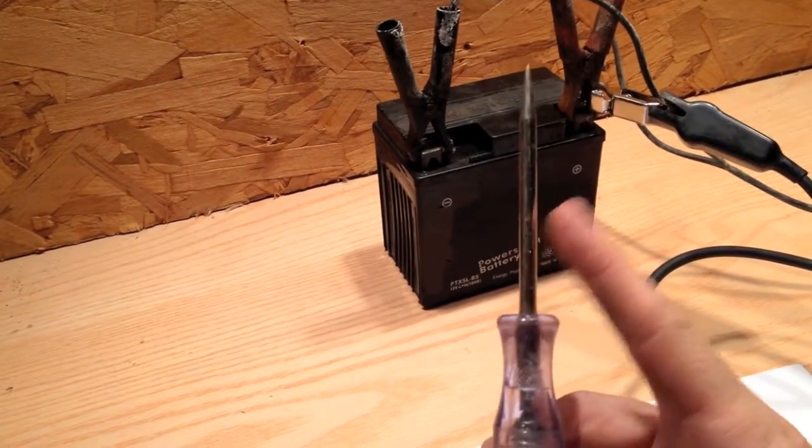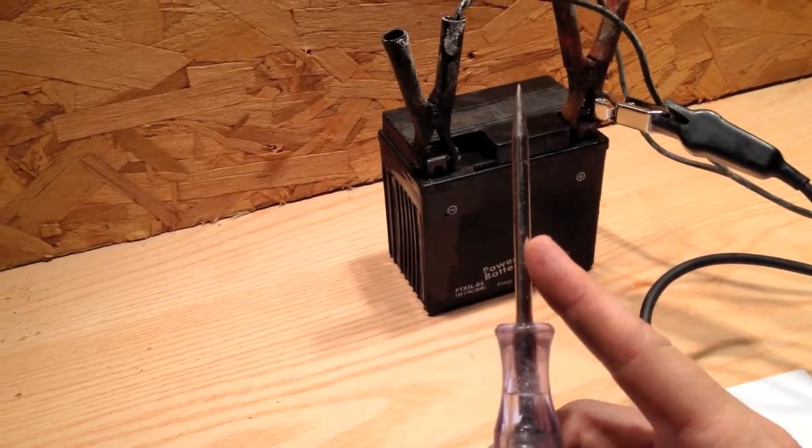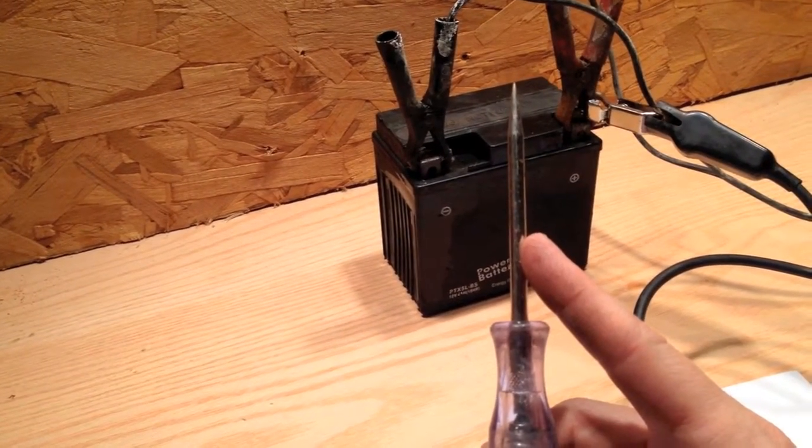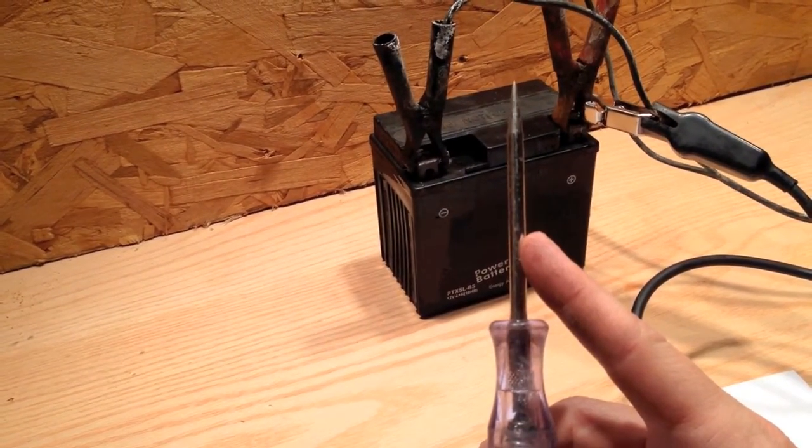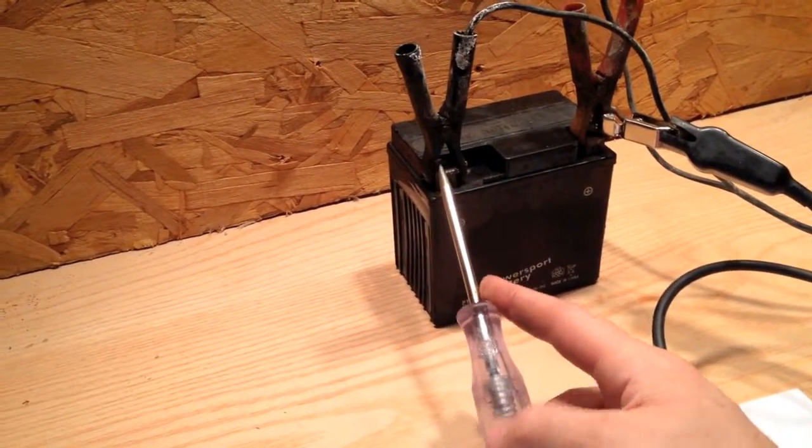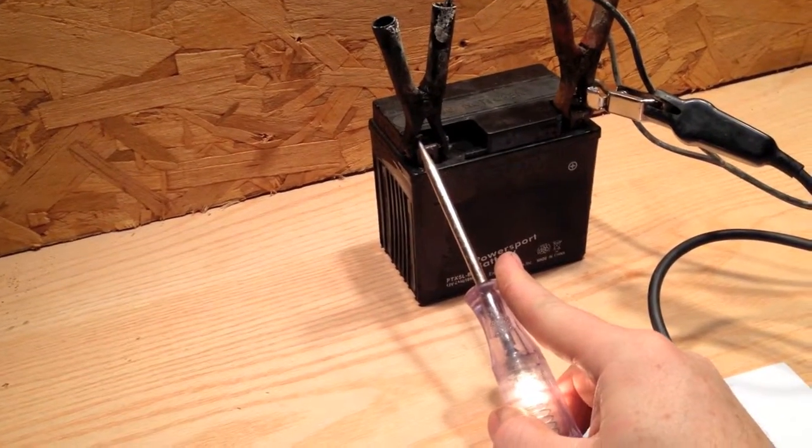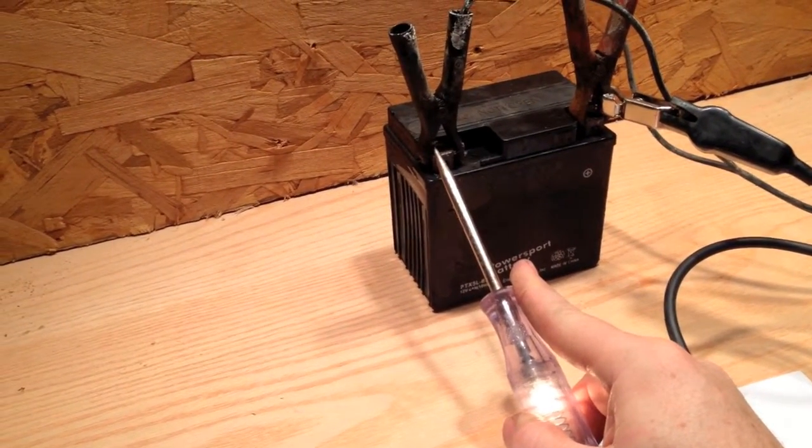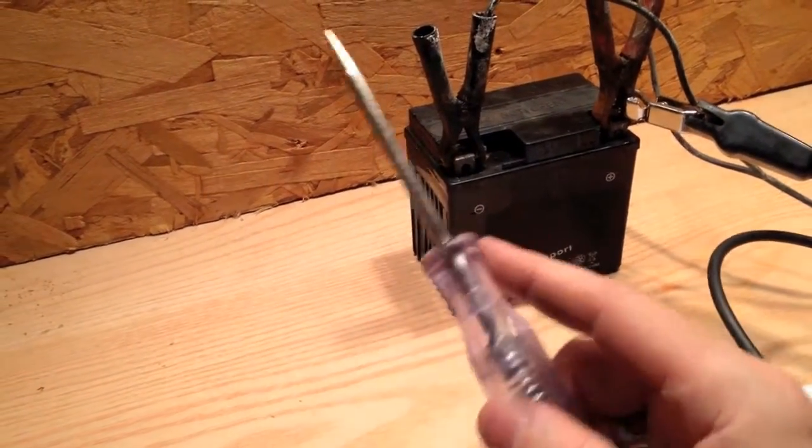You could touch this probe to the frame and see if your battery to frame cable is good. It will allow you to see if this lights up. So when you find a good ground, this should light up and show you that you have a ground. And so now you're searching for grounds.